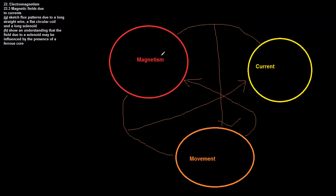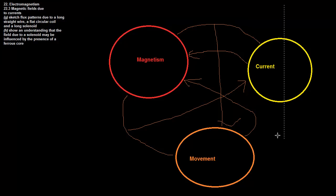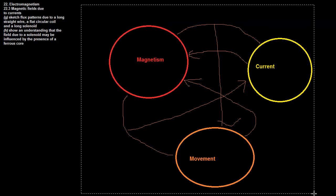Right now let's talk about this one: movement turning into magnetism - movement of charge. Actually I mean current generating a magnetic field. You can see the similarities: movement of charge or current generating a magnetic field. So let's take a look at how this is possible.